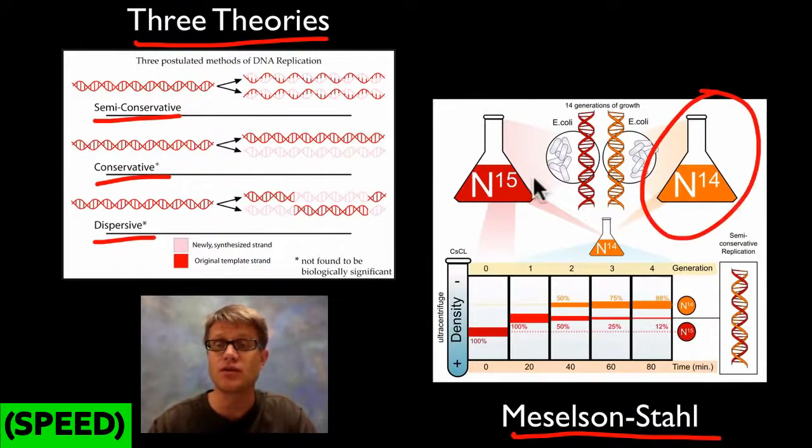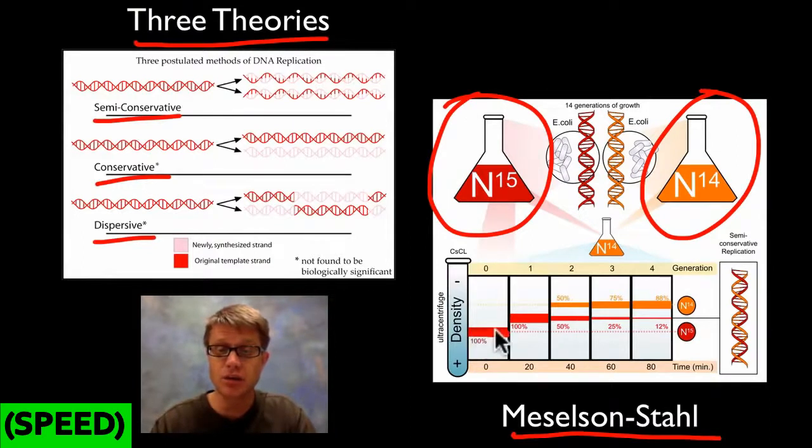And so basically, the whole thing was figured out through the Meselson-Stahl experiment. Basically, what they used was two different types of nitrogen. Good old run-of-the-mill nitrogen-14, and then nitrogen-15, an isotope that's heavier than nitrogen-14. So basically, they bred a bunch of E. coli on nitrogen-15 until all of their DNA was nitrogen-15.